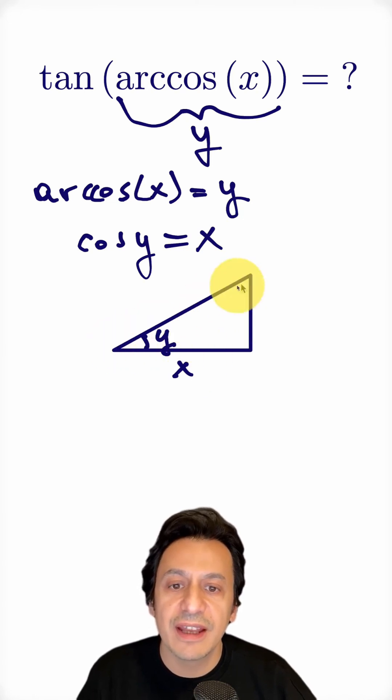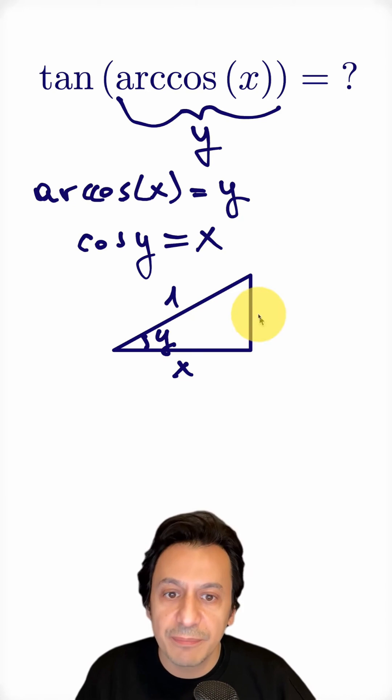I'll choose the adjacent side as x and the hypotenuse as 1. So, when I apply the Pythagorean theorem here, I can write this leg as the square root of 1 minus x squared.